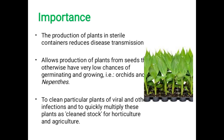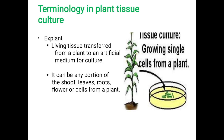The production of plants in sterile containers reduces disease transmission. When we grow plants in sterile, aseptic conditions, there is less chance of disease transmission. Also, plant tissue culture allows production of plants from seeds that otherwise have very low chances of germinating — such as orchids — and to clean particular plants of viral and other infections, quickly multiplying them as clean stock for horticulture and agriculture.